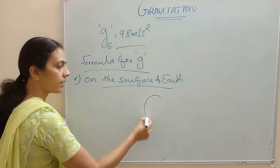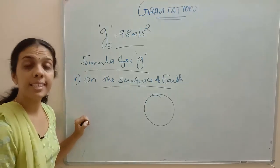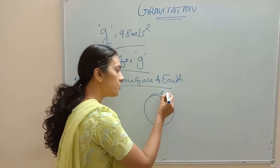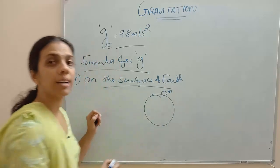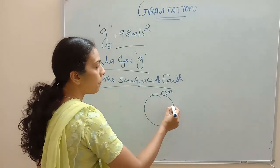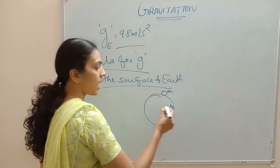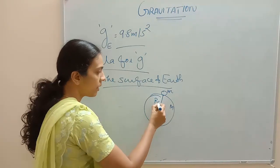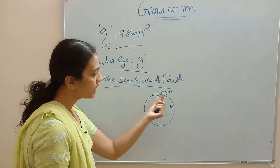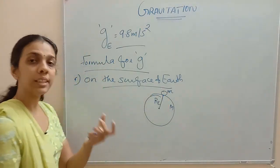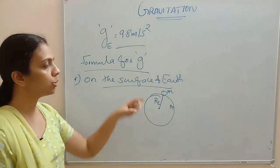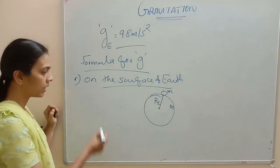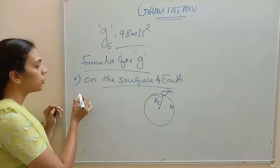Here I am considering Earth as a sphere, and on that sphere I am considering an object having mass m. The mass of the Earth is capital M_E, and this has a radius R_E — R_E is the radius of Earth. We are going to find out the acceleration due to gravity of this object m. How can we find out the acceleration due to gravity? We know, as per Newton's second law of motion.